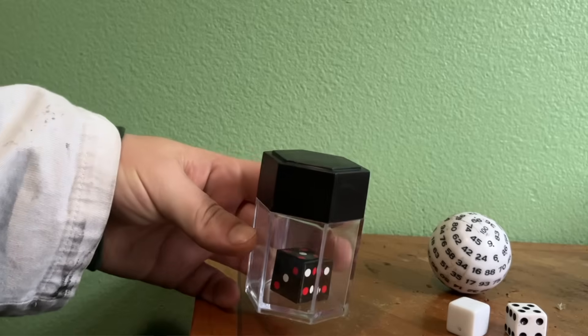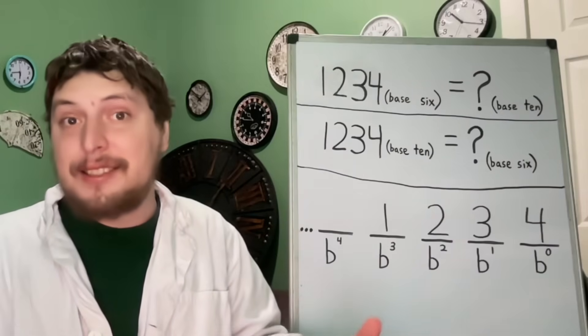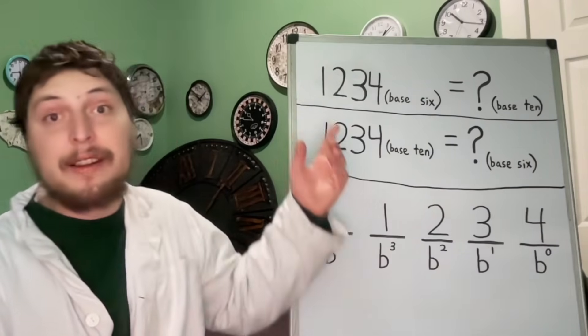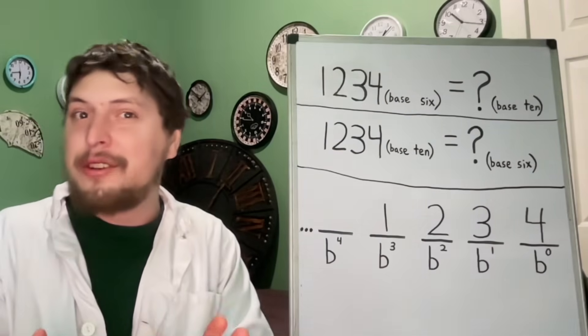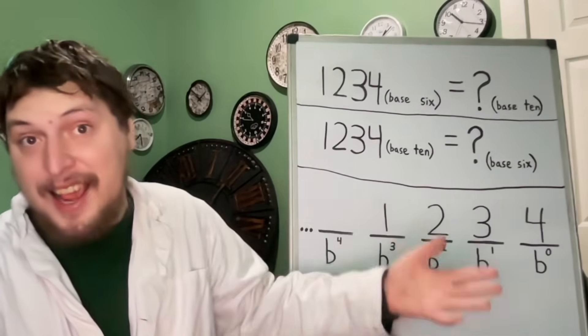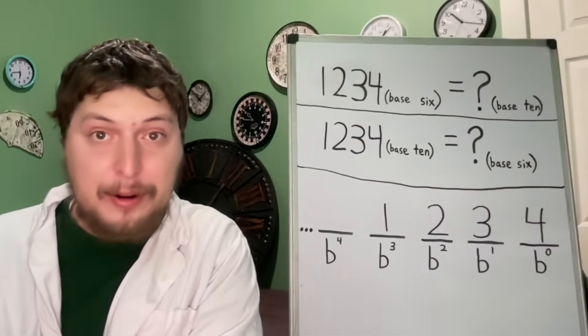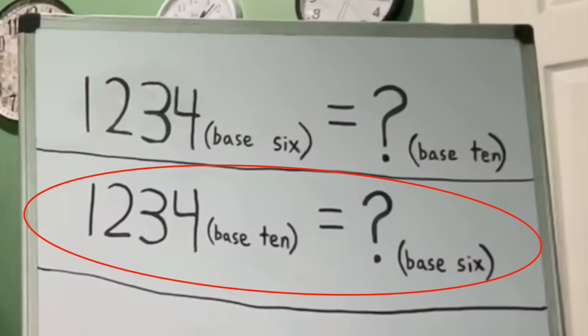There are sort of two ways we could translate to another base in relation to base 10. We could try to translate a string from another base back into base 10, or we could try the slightly trickier direction of taking a string we know in base 10 and writing it in another base. The first is like taking a digit string and finding what quantity it represents, whereas the second is more like taking a quantity and finding the right digit string for it in some context.